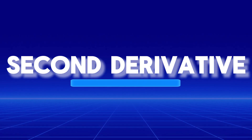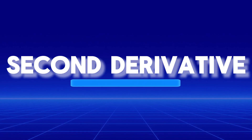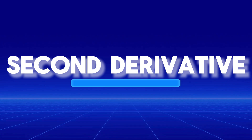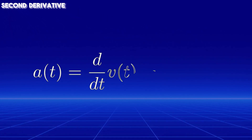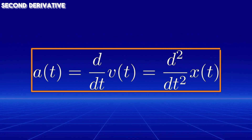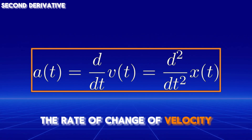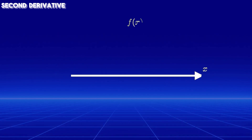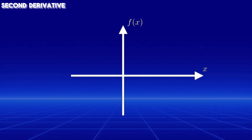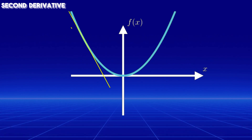The second derivative is a powerful mathematical concept used extensively in physics and engineering. For example, the second derivative represents the acceleration of an object, which is the rate of change of its velocity. In this video, we will explore what the second derivative tells us about a function and its first derivative.